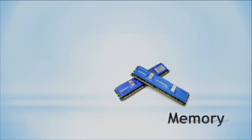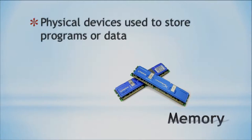First, I'm going to talk about memory in general. The first thing you need to know is that memory is actually a physical device, like the one you see in the picture, and it's going to store anything. In the case of computer science, as a computer science student, you can think that it stores programs which can run — apps or software — or data that can be used within those programs.